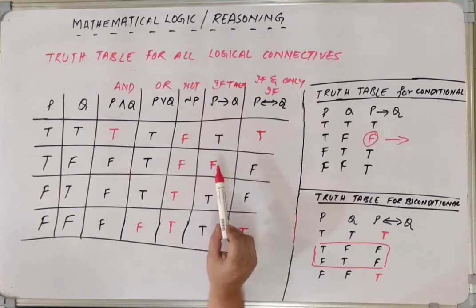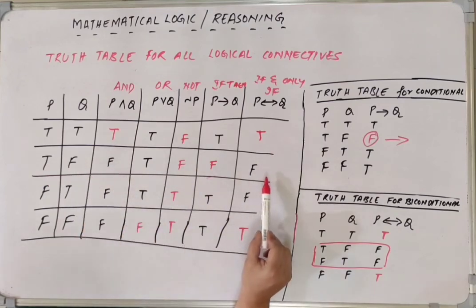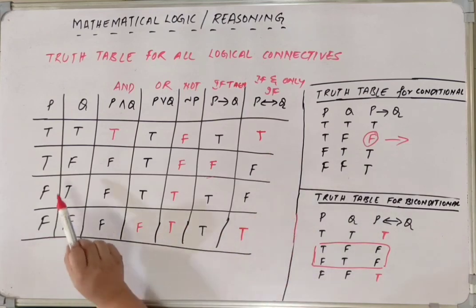P conditional Q is only one case when it's going to be false. When P is true and Q is false. And the last bidirectional one this is going to be true when both P and Q is going to have the same values.